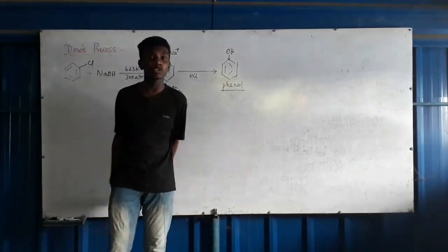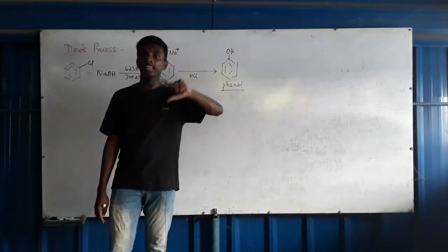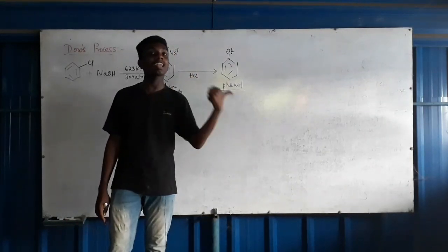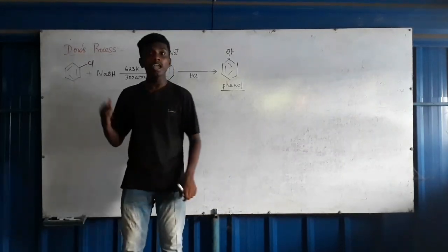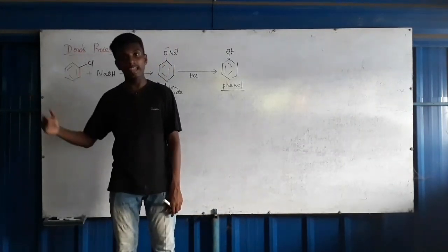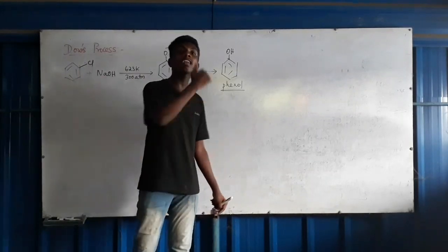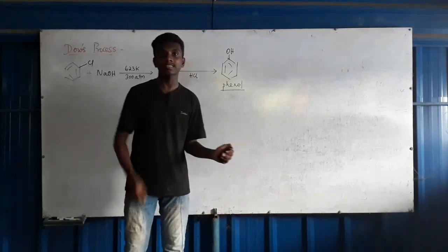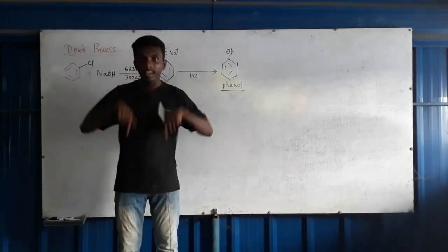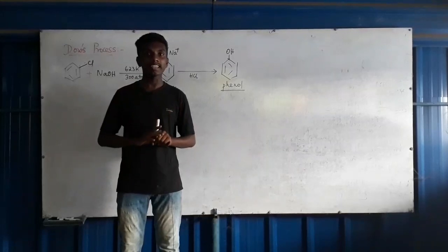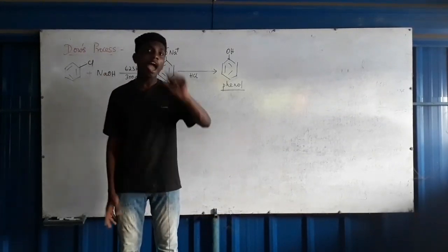To summarize: the Finkelstein Reaction converts alkyl bromides and alkyl chlorides to alkyl iodides. The equation is: RX + NaI → RI + NaX (where X = Cl or Br), using dry acetone. For the Swarts Reaction, alkyl chlorides and alkyl bromides are converted to alkyl fluorides.